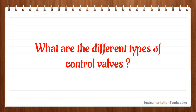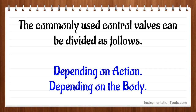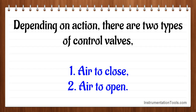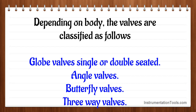What are the different types of control valves? Commonly used control valves can be divided as follows. Depending on action, there are two types: air-to-close and air-to-open. Depending on body, valves are classified as globe valves (single or double seated), angle valves, butterfly valves, and three-way valves.